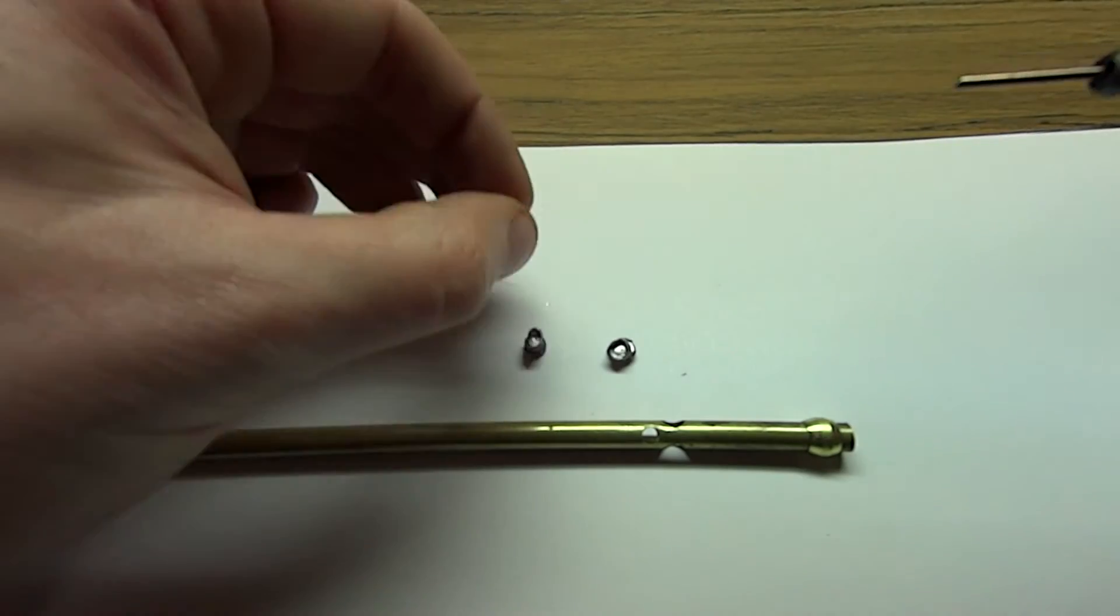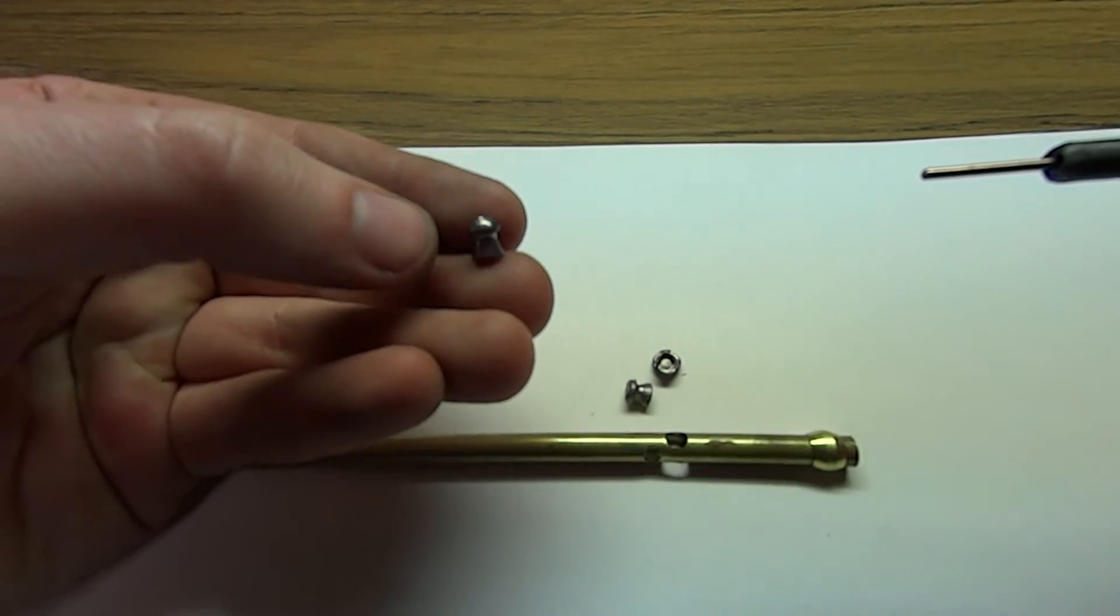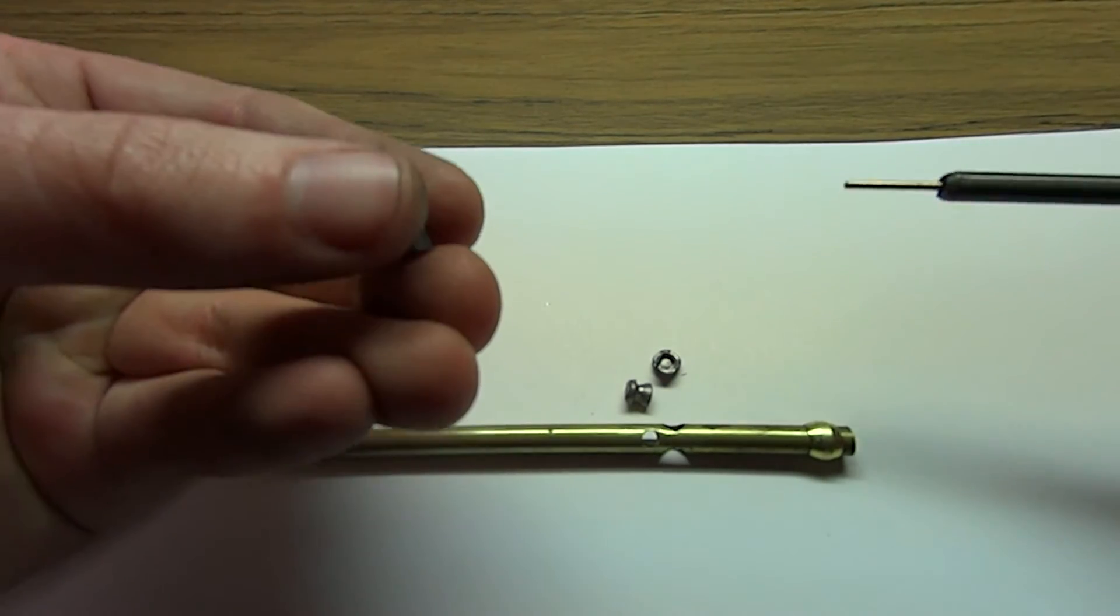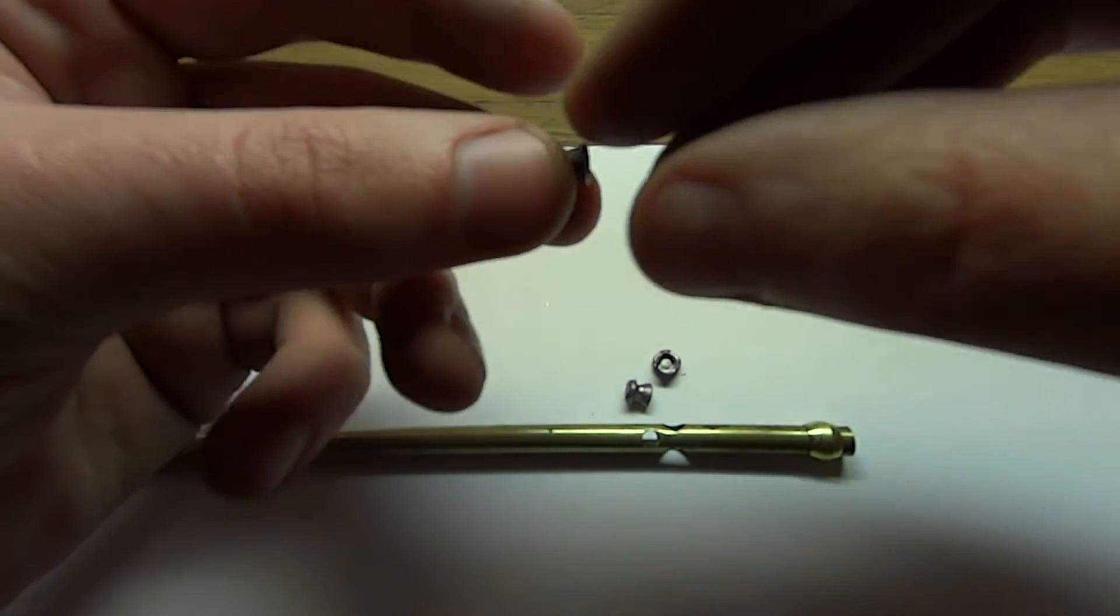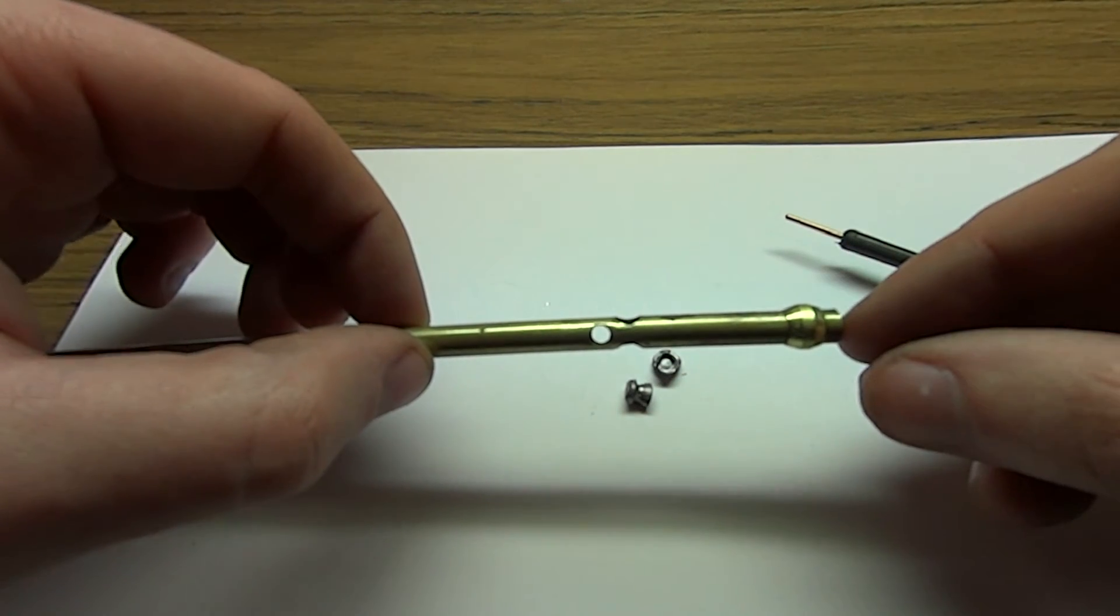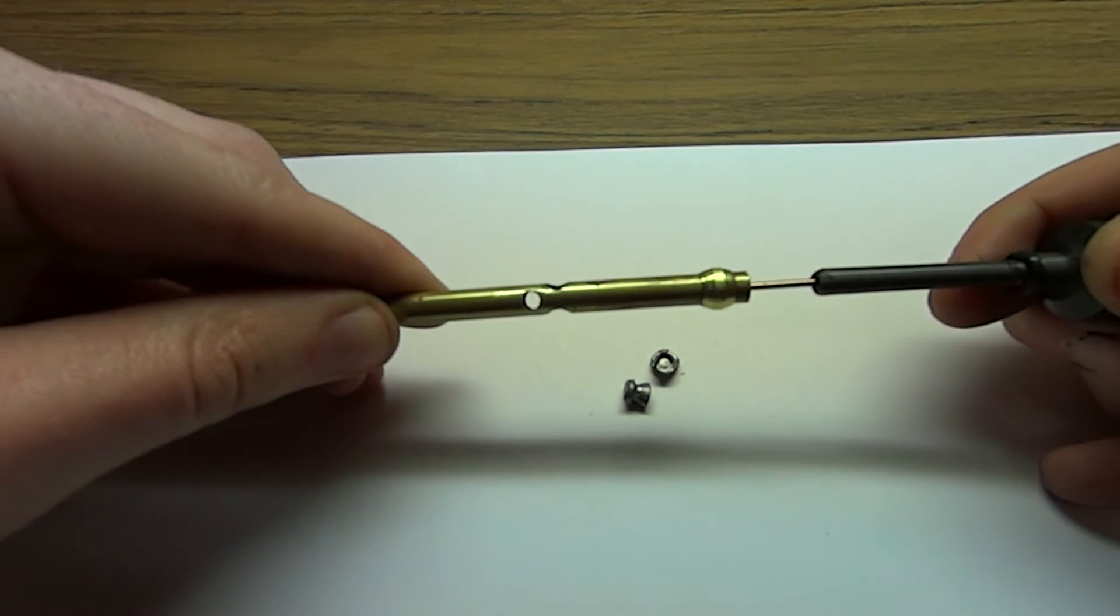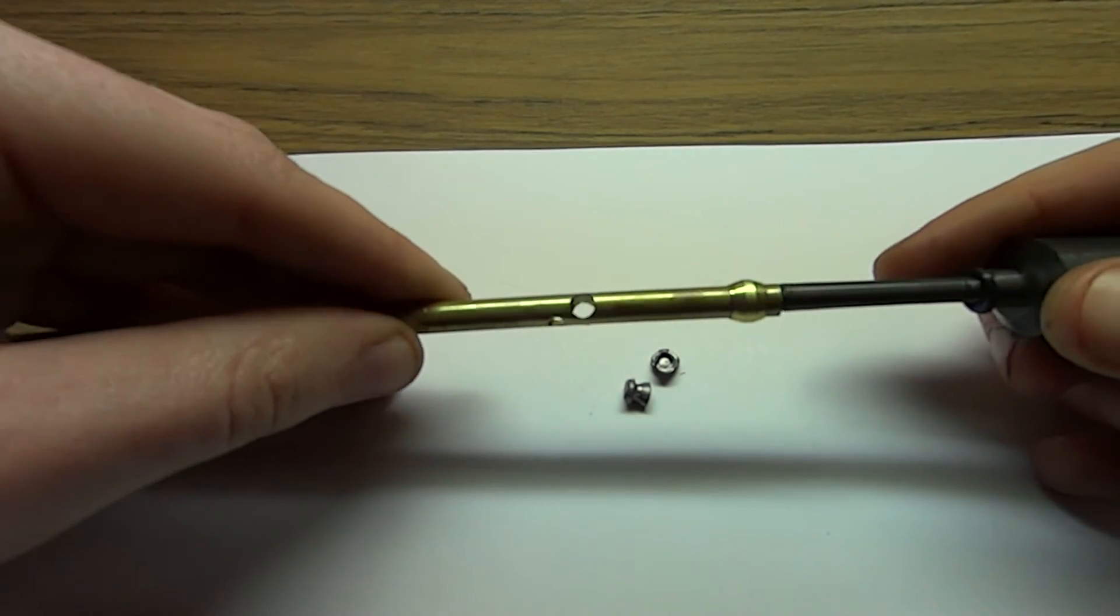So here, this is one of the pellets that it fires. This is obviously before being fired. There's the size of it. So what you do is, obviously, once this is in the gun, you stick the pellet in there. It fits nice and tight. In fact, it's got a ridge there, so it's kind of hard to press in here. But there we go.